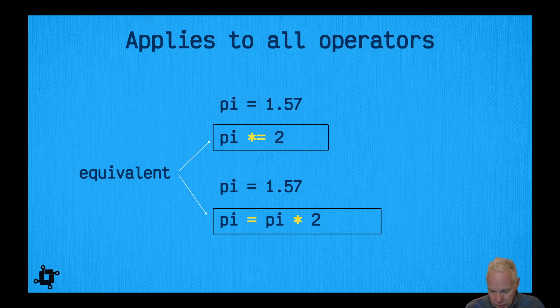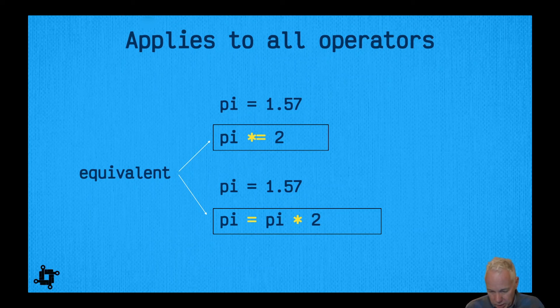You could do this for multiply as well. So here we're saying if pi is 1.57, here we're multiplying it by 2 and assigning its value, and again it's equivalent to this.